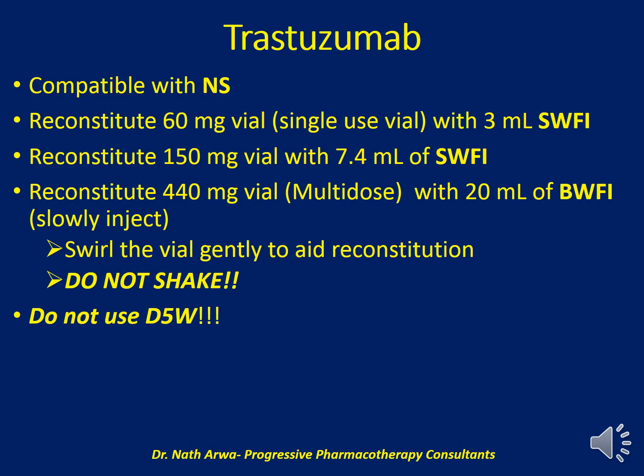Trastuzumab is compatible with normal saline — never use 5% dextrose, as the two are incompatible. Reconstitute 60 mg vials using 3 ml, 150 mg vials using 7.4 ml, and 440 mg multidose vials using 20 ml of bacteriostatic water for injection. Slowly add the diluent and swirl gently to aid reconstitution — do not shake to avoid foaming.